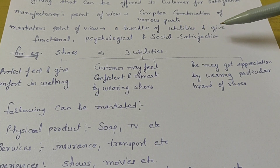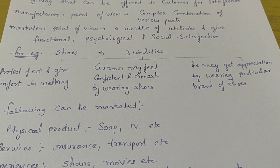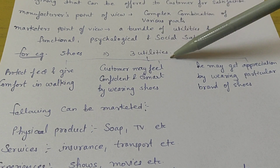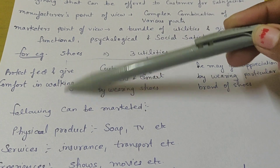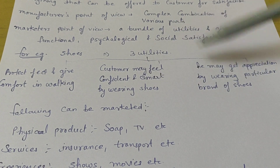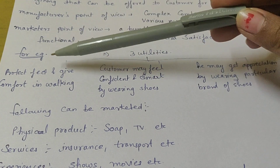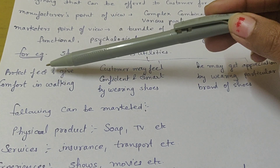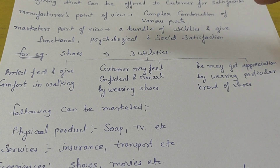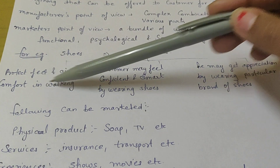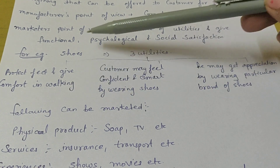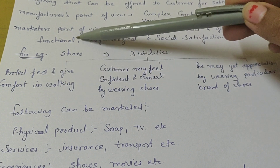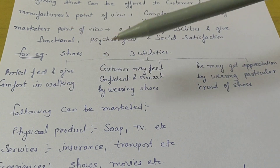Let me use an example so you will understand. For example, we take shoes — it is a product that gives three utilities. First is functional satisfaction: shoes protect your feet and give comfort while walking. This is the functional satisfaction — the basic function of the shoes.